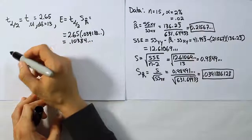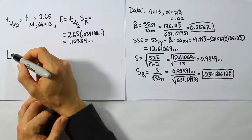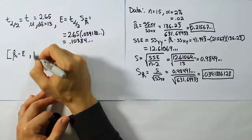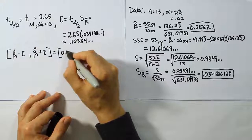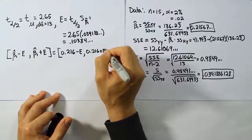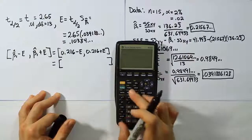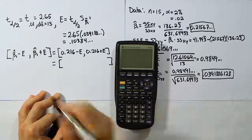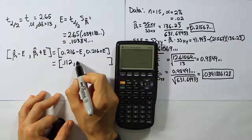The last step is to take the margin of error and subtract it from beta1_hat for the lower bound, then add it for the upper bound. Our beta1_hat is 0.216, and the error is 0.104. Using the stored values in my calculator, B minus the error and B plus the error, I get the interval: 0.112 to 0.320.